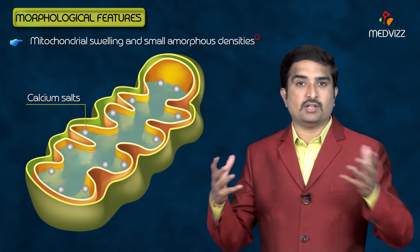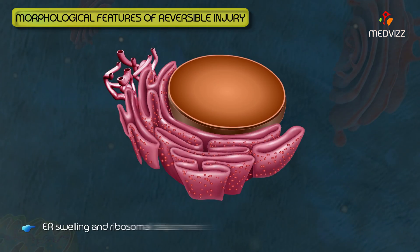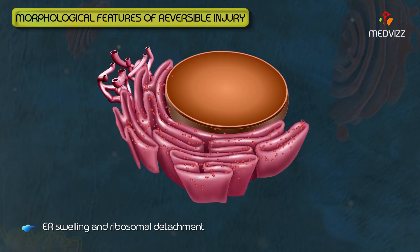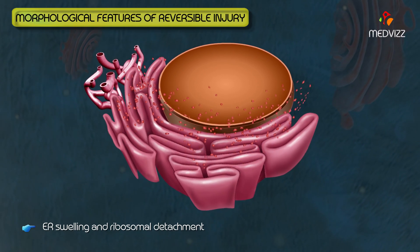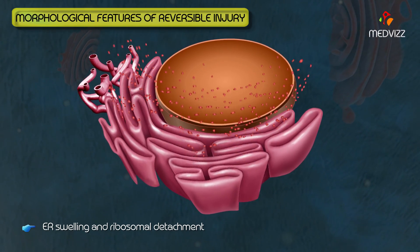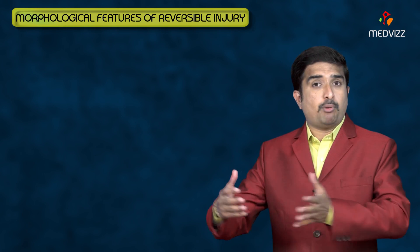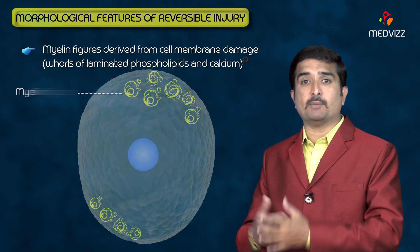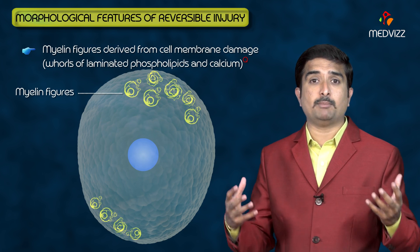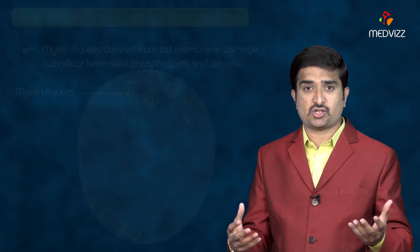Additional ultrastructural changes include endoplasmic reticulum swelling and ribosome detachment. One important point is the formation of myelin figures, which are derived from cell membrane damage. This completes all the biochemical events and pathological events seen under reversible cell injury.